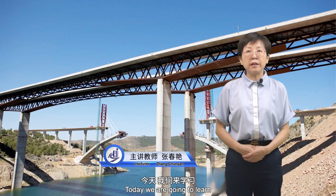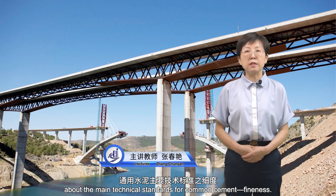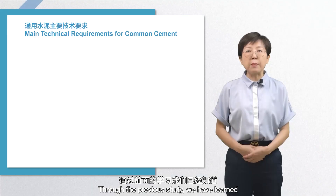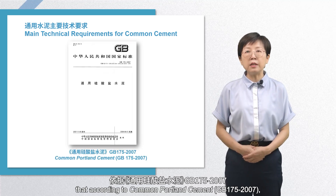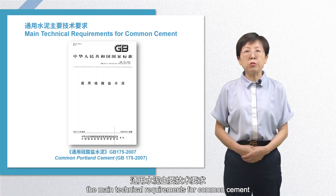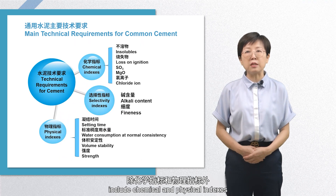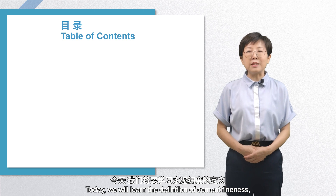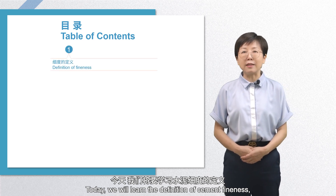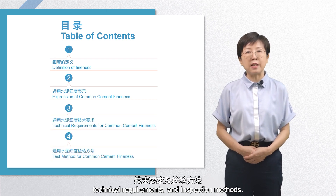Hello, everyone. Today we are going to learn about the main technical standards for common cement fineness. Through the previous study, we have learned that according to Common Portland Cement GB175-2007, the main technical requirements for common cement include chemical and physical indexes as well as selectivity indexes. Fineness is one of the selectivity indexes. Today, we will learn the definition of cement fineness, the expression of common cement fineness, technical requirements, and inspection methods.